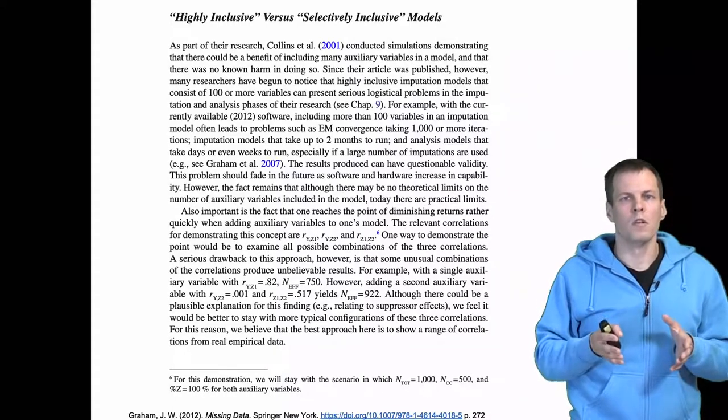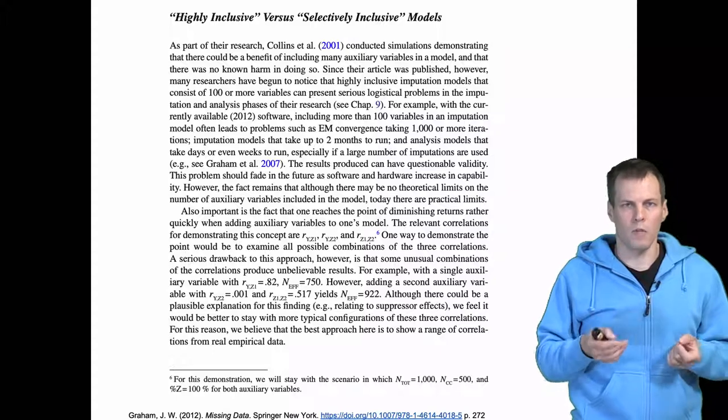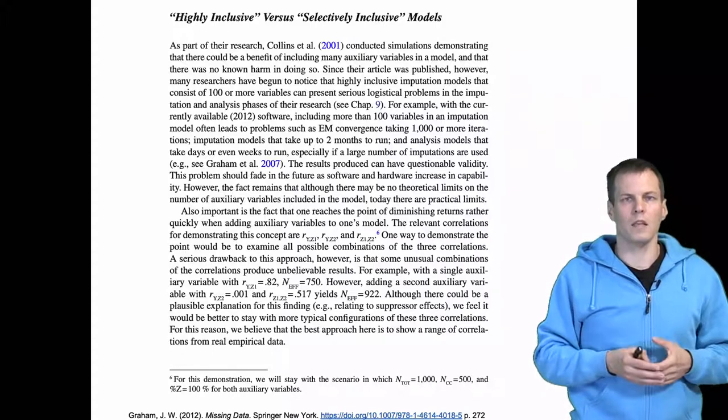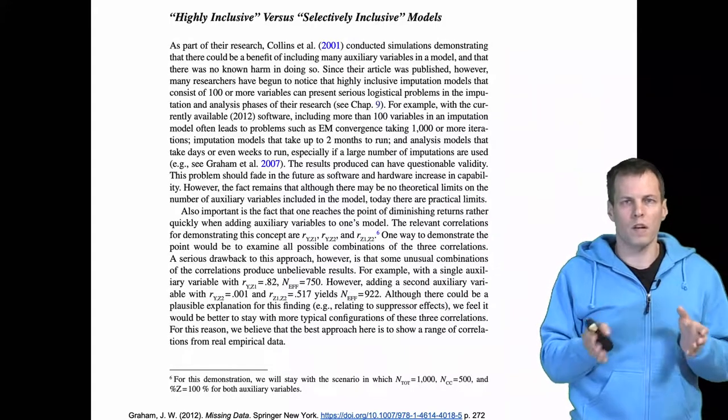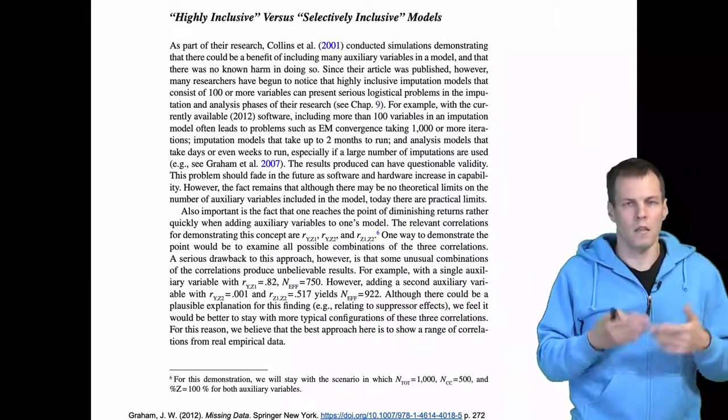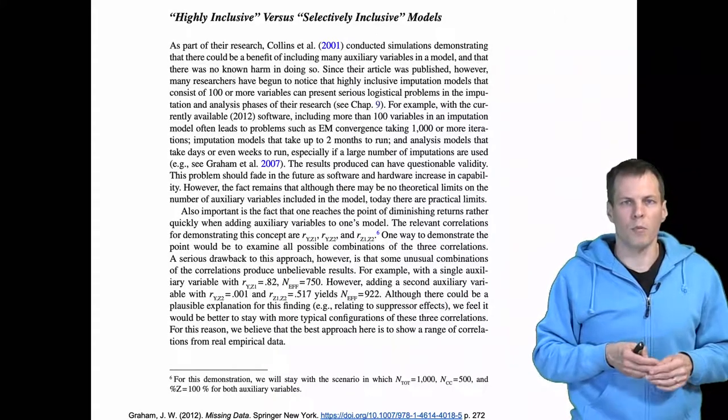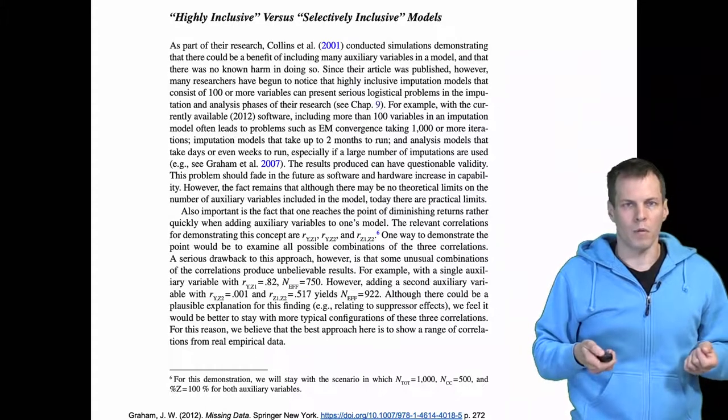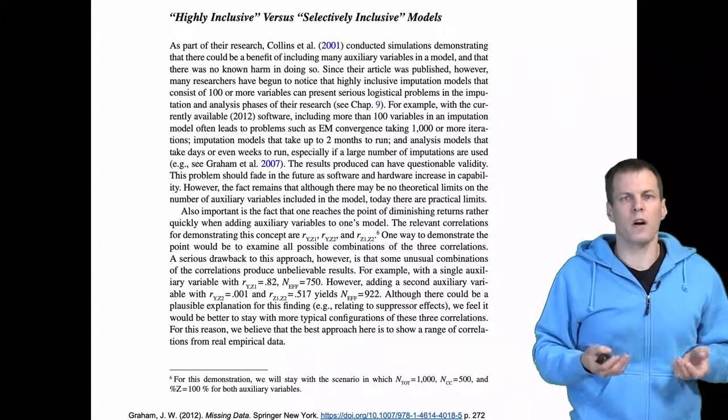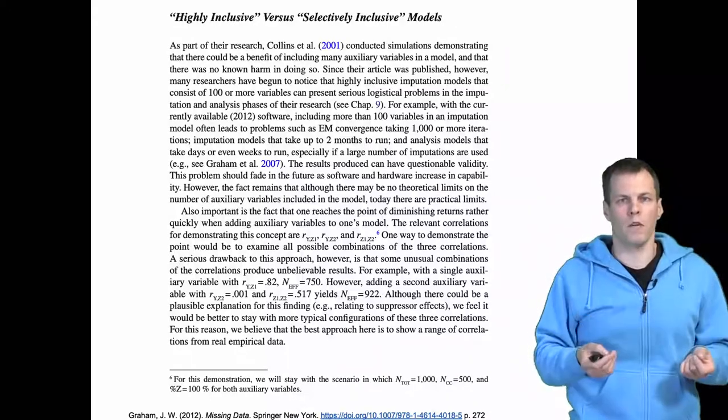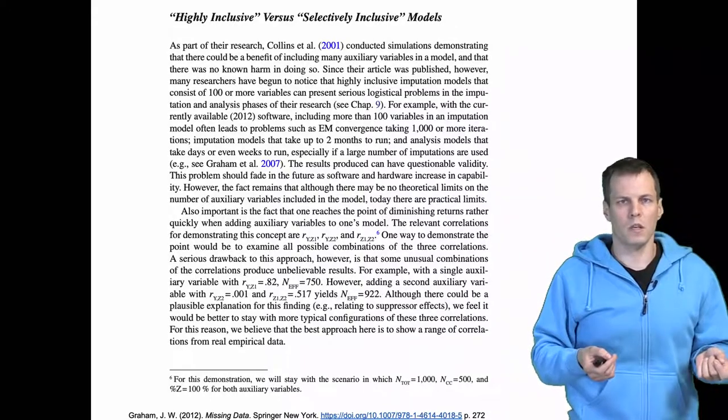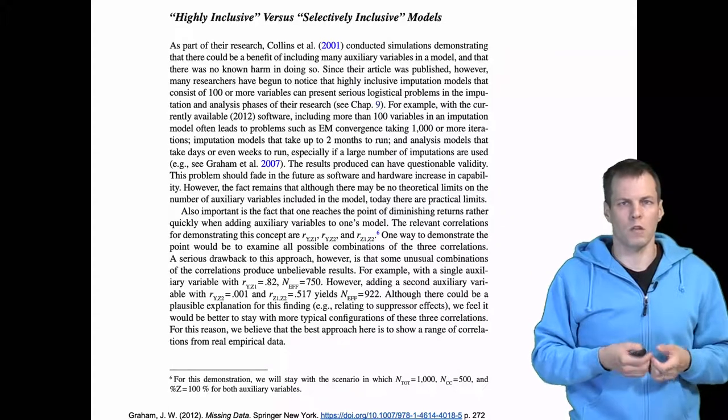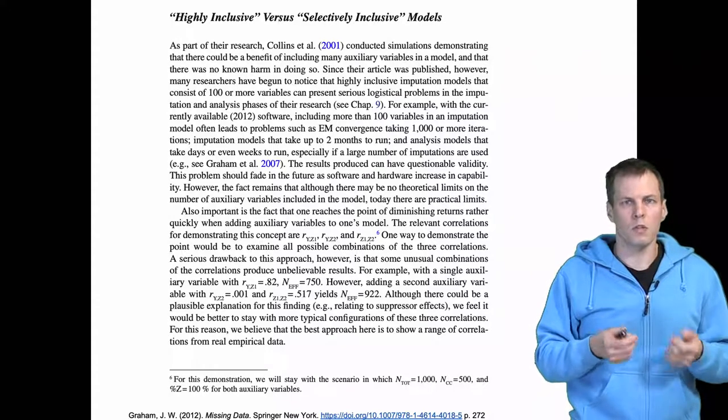So the current recommendation is that you include auxiliary variables very liberally. But if you have problems in getting the model to converge, then you should take some of those away. And the key thing is that if we have two auxiliary variables that are highly correlated, then that may cause a problem in convergence. And then taking one of those out might help the problem. So as a general advice, using background variables that are not interesting for the main research question as auxiliary variables is pretty much always a good idea when you do a missing data analysis.